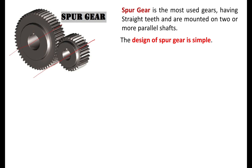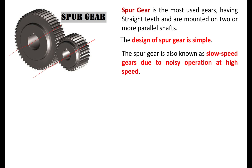The important feature of spur gear is that its design is very simple to understand. The spur gear is also known as slow speed gears. Why? Due to noisy operation at high speed — if spur gears are revolving at high speed, it creates noise. That is why it is also known as slow speed gears.